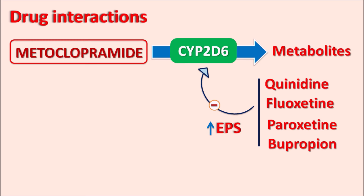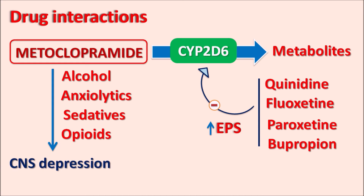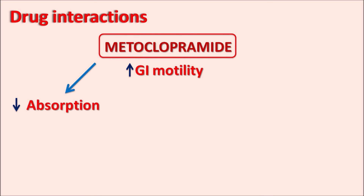Metoclopramide acts on the CNS, so when given with CNS depressants such as anxiolytics, sedatives, opiates, or alcohol, it can produce severe CNS depression. Another important interaction is related to its increased GI motility: since this drug increases GI motility, it can reduce the absorption of drugs that depend on GI motility — for example, the absorption of digoxin and atovaquone are reduced by metoclopramide.